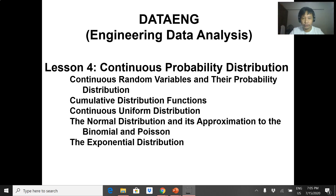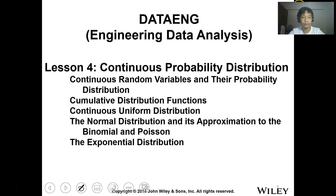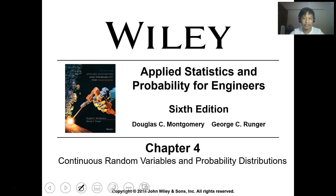Hello everyone, we're here to discuss Lesson 4 for Engineering Data Analysis. This is continuous probability distribution. The content covers continuous random variables and their probability distributions, the cumulative distribution, continuous uniform distribution, the normal distribution, its approximation to the binomial and Poisson distributions, and the exponential distribution. This is Chapter 4 of Applied Statistics and Probability for Engineers by Douglas Montgomery and George Runger, sixth edition.